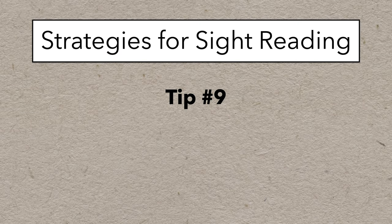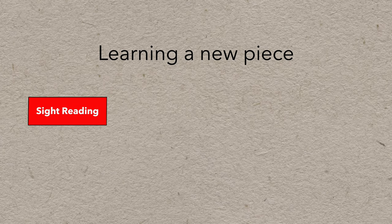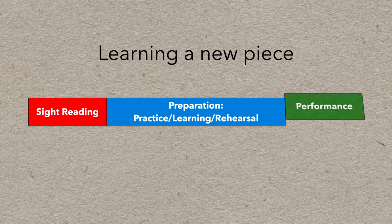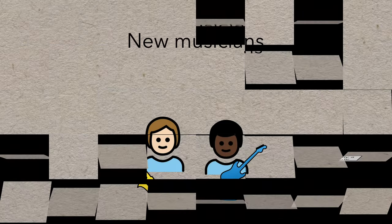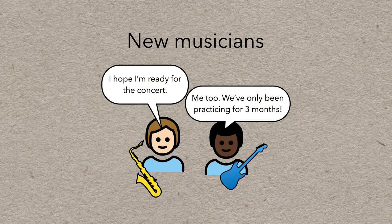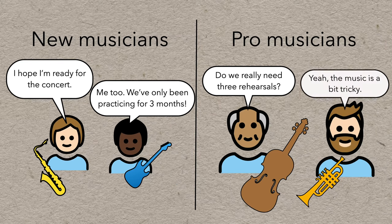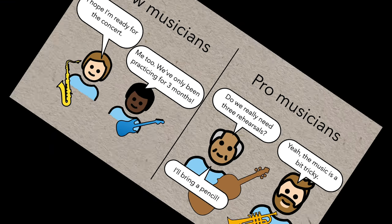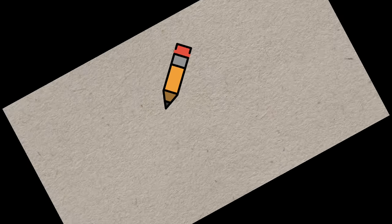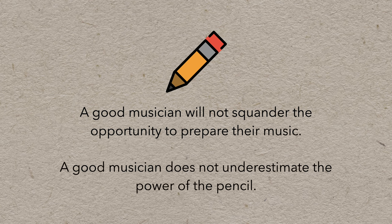Next, this is a big one and it could really transform you as a musician, and that is use your pencil. Learning a new piece of sheet music always begins with sight reading, but that's usually only one step along the way to learning and performing a piece. You might even learn the piece well enough that the sheet music is mostly just a reminder of what to play. But before that point, you're probably still in the reading phase. Now, whether you're a new musician who will have many practices before a concert, or a more advanced musician who might only have a short amount of time to prepare music, if you have at least one practice session before a performance, you have a huge opportunity to find the traps in a piece and prepare your music with pencil markings to help avoid those traps during the performance. A good musician will not squander this opportunity. A good musician does not underestimate the power of the pencil.